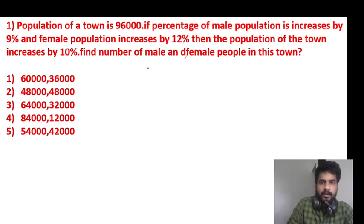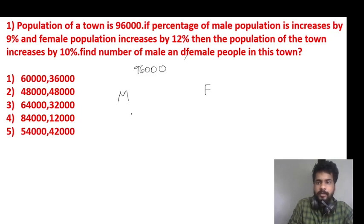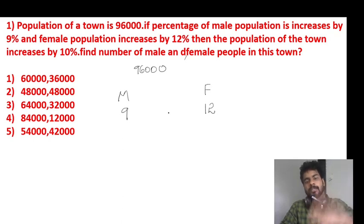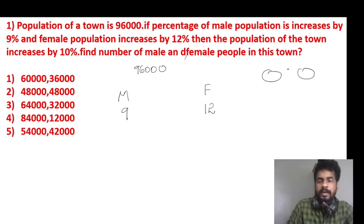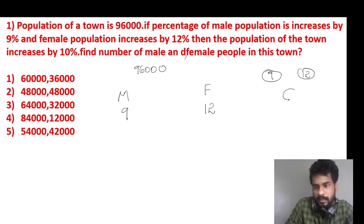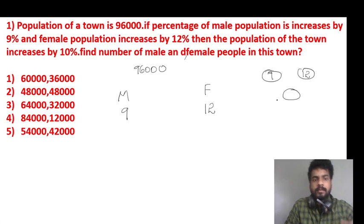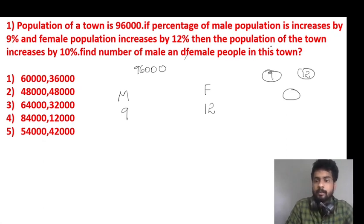So, what are we talking about? The population of the town is increased by 10%. What is the type of problem? We have a method of allegation. How does it look? Two values — the male and female are the two components, and the central value is the average. The population of the town is increased by 10%.